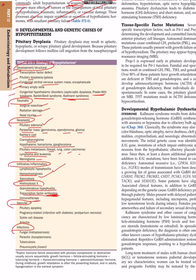Vascular causes include pituitary apoplexy, pregnancy-related infarction with diabetes, postpartum necrosis — Sheehan syndrome — and sickle cell disease with arteritis. Infectious causes include fungal histoplasmosis, parasitic toxoplasmosis, TB, and Pneumocystis jirovecii.